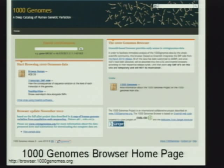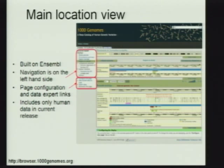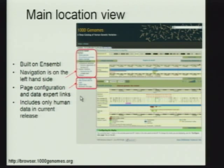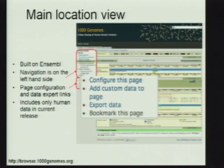This is the most recent version of the browser — we actually just updated it today. The main location view of the browser is built on Ensembl. There's navigation on this side where you have regions of the genome and chromosome summaries. There's a link for resequencing — I'll get back to that in a second — where we have information about each of the individuals in the high-coverage trio. Lower down there are aspects of page configuration. The key link here is 'Configure This Page,' which changes what you're looking at, changes which tracks are available, as well as export data, which I'll come back to in a few minutes.